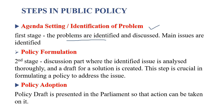यह देखा जाता है कि कौन सी problem है जिस पर policy बनाने की जरूरत है। Second is policy formulation — इस stage में जिस problem को identify किया गया है उस पर सिर्फ discussion नहीं बल्कि proper analysis होता है और policy का एक draft तैयार किया जाता है जिसमें उस problem का solution बताया जाता है। यह बहुत important step है — जैसे अगर किसानों की फसलें खराब हो रही हैं और वो आत्महत्या कर रहे हैं, तो उस problem का solution — कि farmers को financial support दिया जाएगा in case of crop failure — draft में शामिल किया जाएगा।